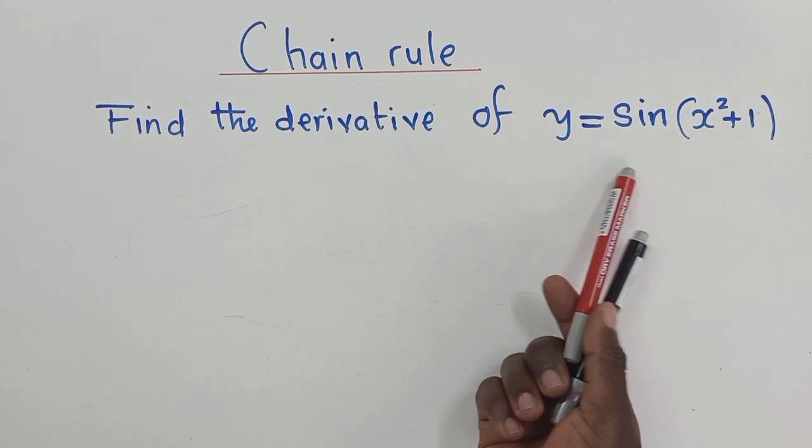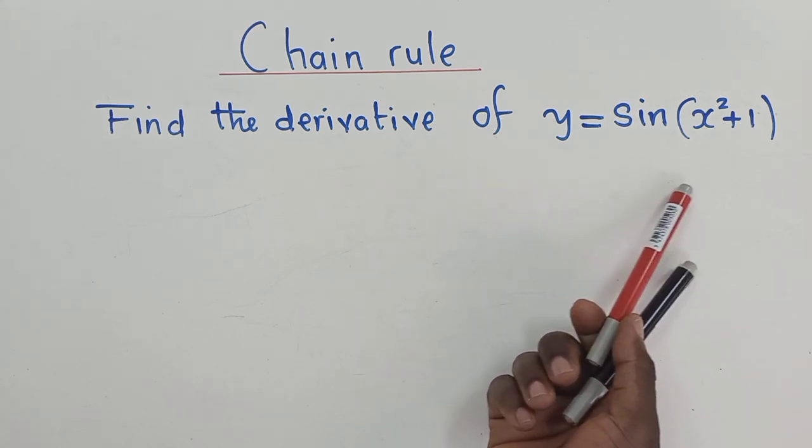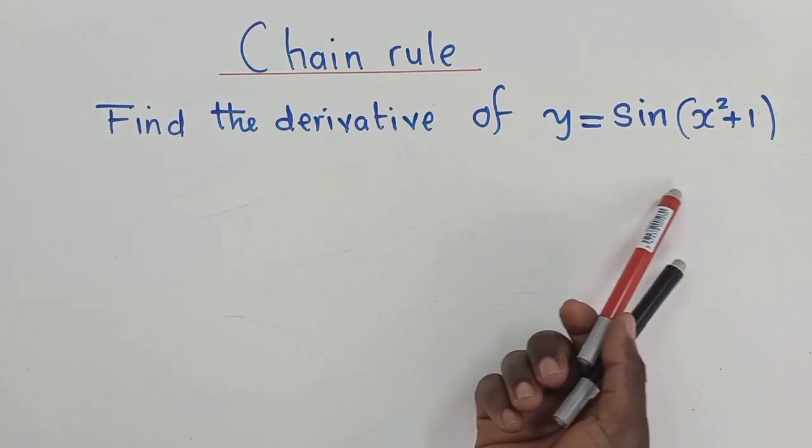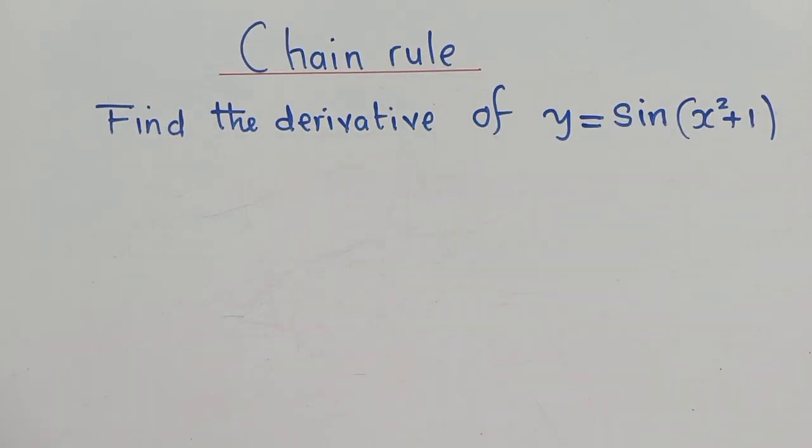We find the derivative of y equals sine x squared plus 1 inside the brackets. So how do you go about that one? Here we basically need to use chain rule. So how do we use chain rule?